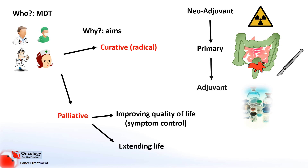Adjuvant treatments, on the other hand, are given after the main treatment to reduce the risk of the cancer returning. For example, adjuvant chemotherapy might be used after cutting the tumour out with surgery to prevent the formation of secondary tumours.